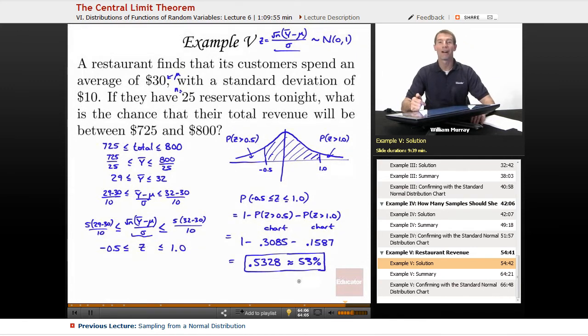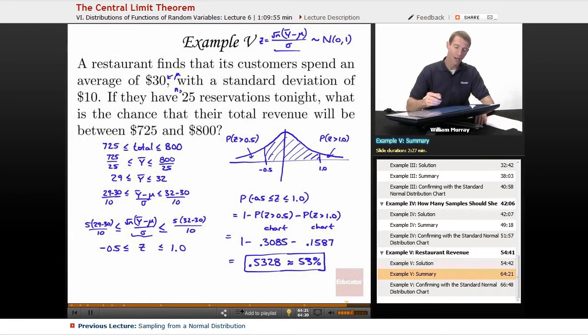So that's the probability that this restaurant's total profit for tonight is between $725 and $800 tonight. Let me show you the steps here. I wanted to find the probability that my total was between $725 and $800. What I really know is a result about the average that each customer tonight is going to spend. So I wanted to convert that total into an average. I just divided it by the number of customers. $725 over $25 gives me $29, $800 over $25 gives me $32.